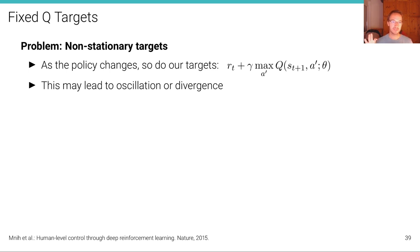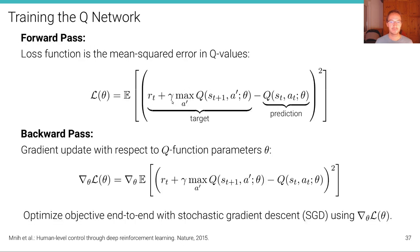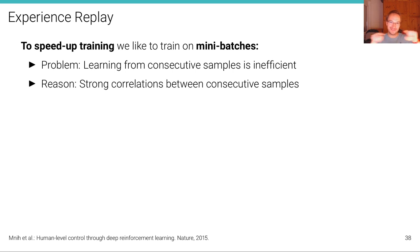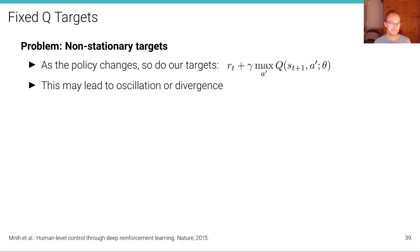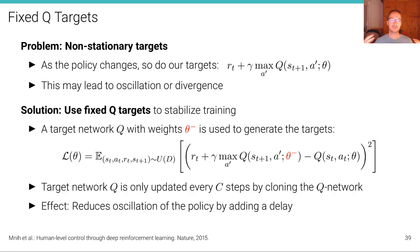The second change we make is fixing the Q-targets to make updates even slower. The problem is non-stationary targets: as the policy changes with every gradient descent update step, so do our targets, because they rely on the Q-function. We're always trying to chase a moving target, which is difficult and might easily lead to oscillation or even divergence.